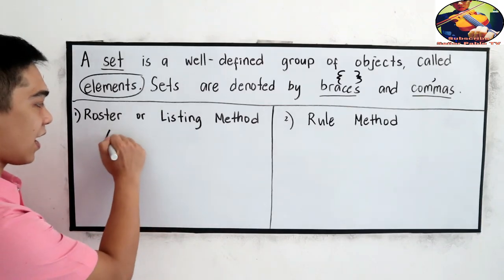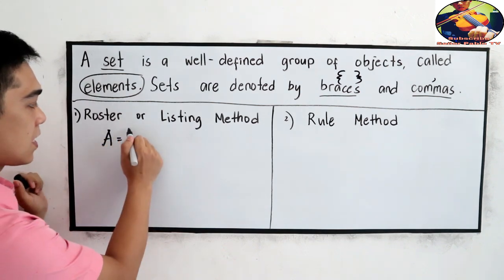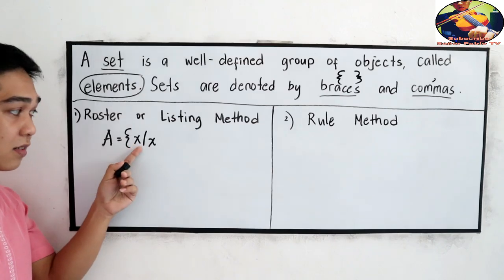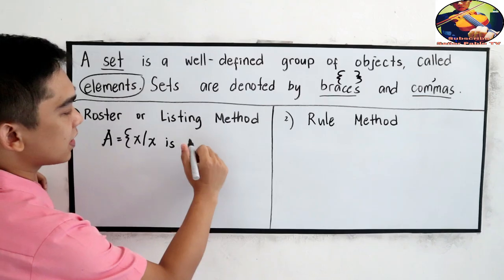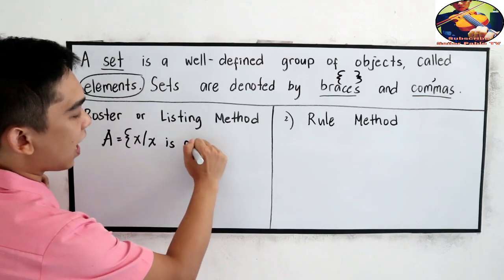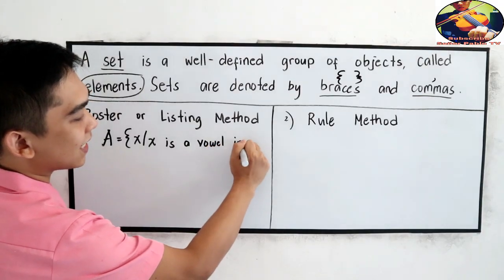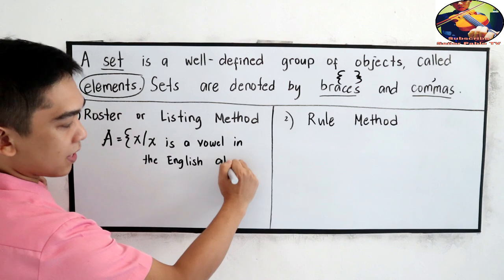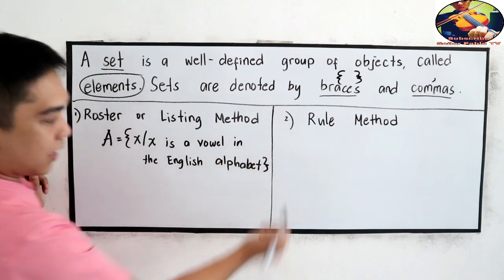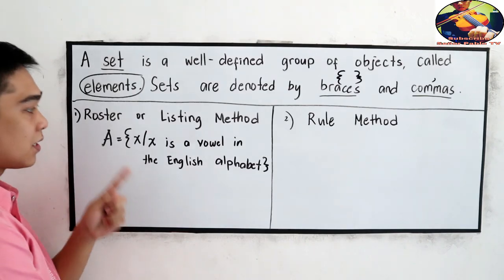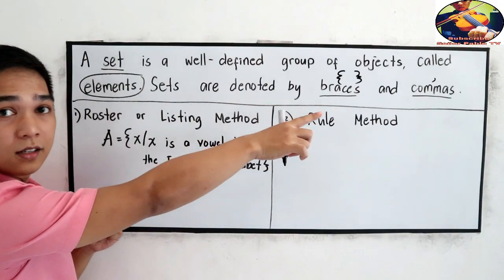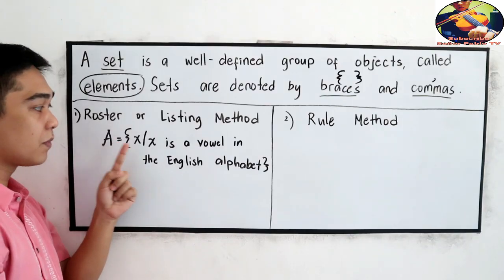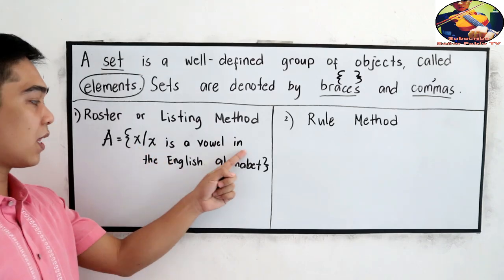Let's say we have set A equal to x such that x is a vowel in the English alphabet. Again, this will be denoted by our braces and comma. So set A is equal to x such that x is a vowel in the English alphabet.